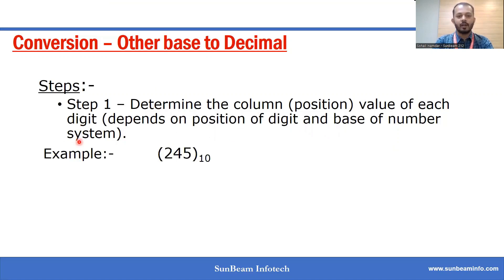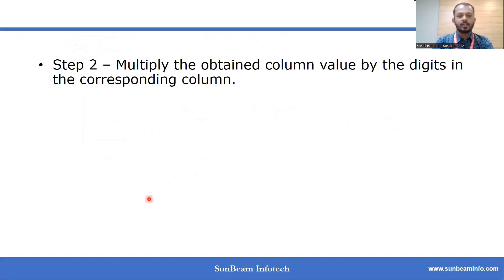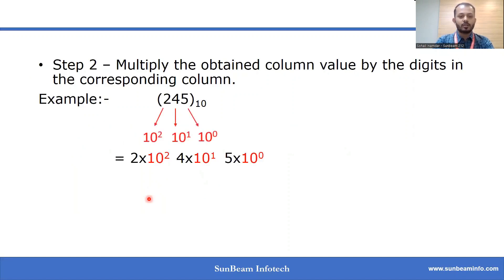For example, take 245: the digit 5 is at position 10 raise to 0, 4 is at 10 raise to 1, and 2 is at 10 raise to 2. In the second step, we multiply the obtained column value by the digit in the corresponding column — so 2 is multiplied by 10 raise to 2, 4 is multiplied by 10 raise to 1, and 5 is multiplied by 10 raise to 0.